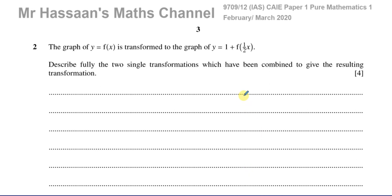This question is all about transformations of graphs. It says the graph of y equals f of x is transformed to the graph of y equals 1 plus f of a half of x. We're told to describe fully the two single transformations which have been combined to give the resulting transformation.